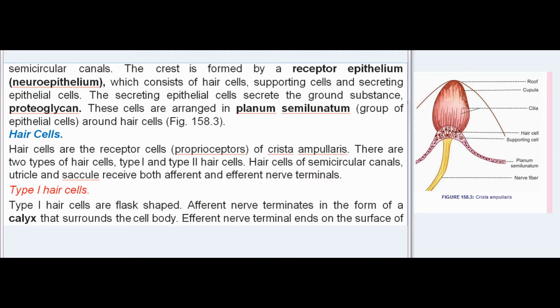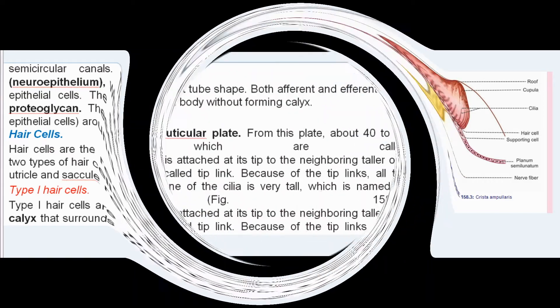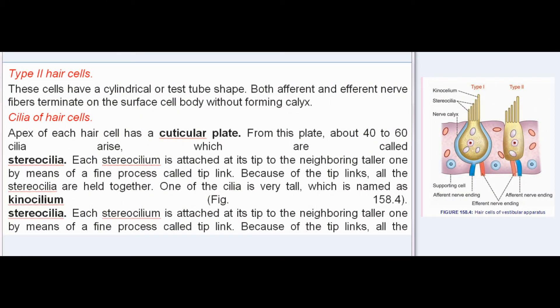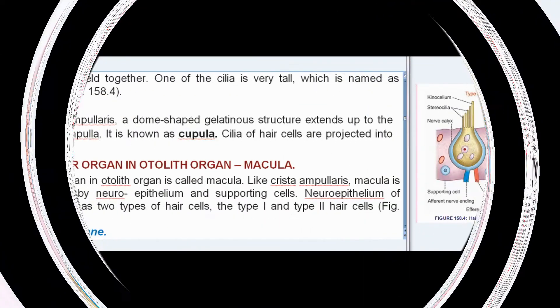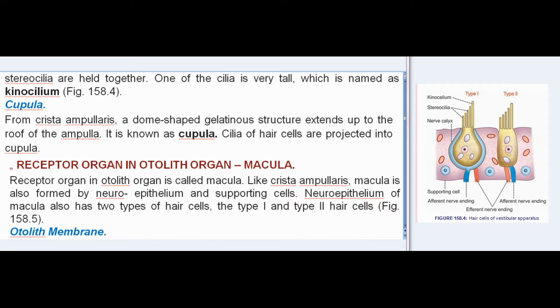Type II hair cells have a cylindrical or test tube shape. Both afferent and efferent nerve fibers terminate on the surface of the cell body without forming a calyx. The apex of each hair cell has a cuticular plate, from which about 40 to 60 cilia arise, called stereocilia. Each stereocilium is attached at its tip to the neighboring taller one by a fine process called a tip link. Because of the tip links, all the stereocilia are held together. One cilium is very tall and is named the kinocilium.